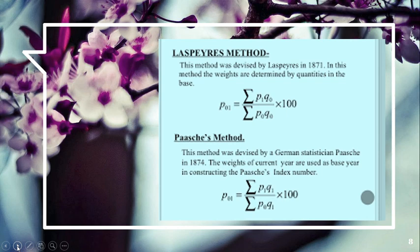Now a recap of the Paasche's method. This method was devised by a German statistician Paasche in 1874. The weights of the current year are used as base year in constructing Paasche's index number. So P01 is equal to sigma P1Q1 divided by sigma P0Q1 into 100.